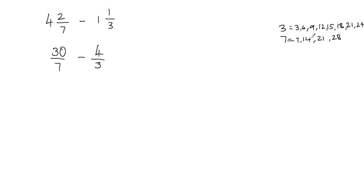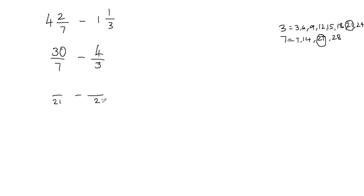Now, what is the least common multiple? These are the multiples of 3 and these are the multiples of 7. The least common multiple in both is 21 — we see 21 in both lists. So the least common multiple is 21, and I'm going to use this to make my denominators equal. So I'll put 21 in both denominators.